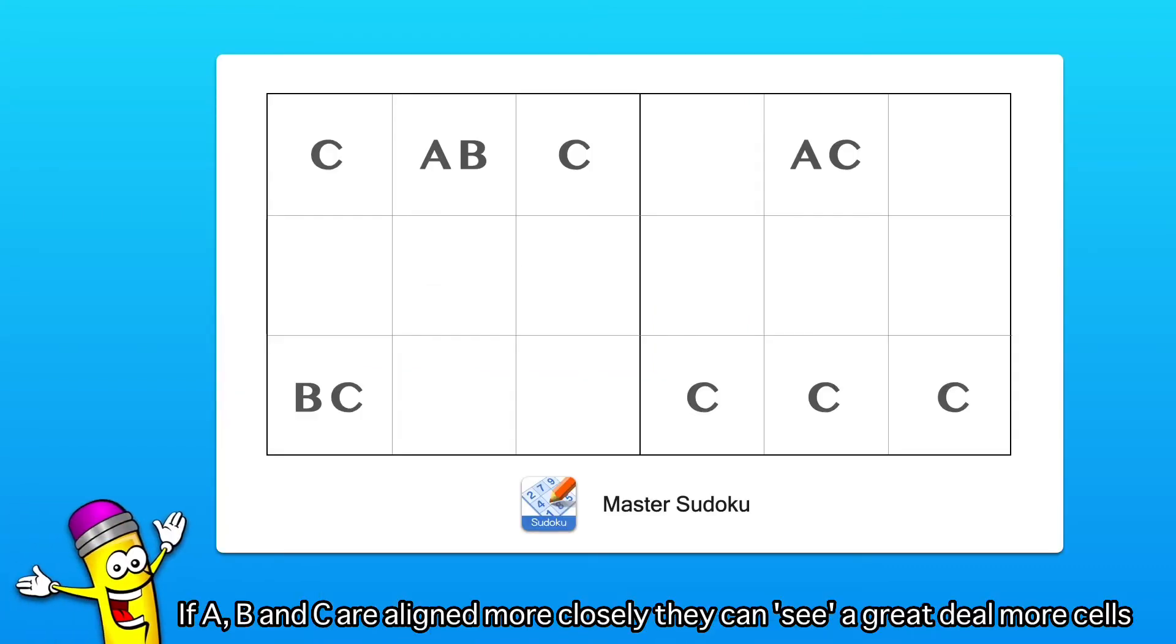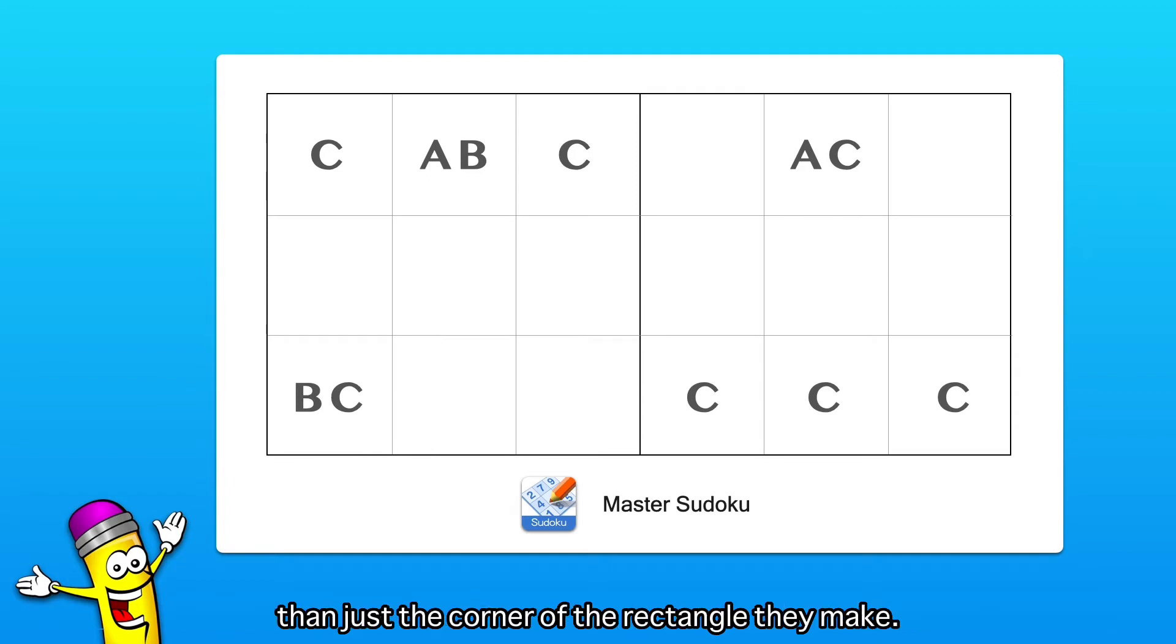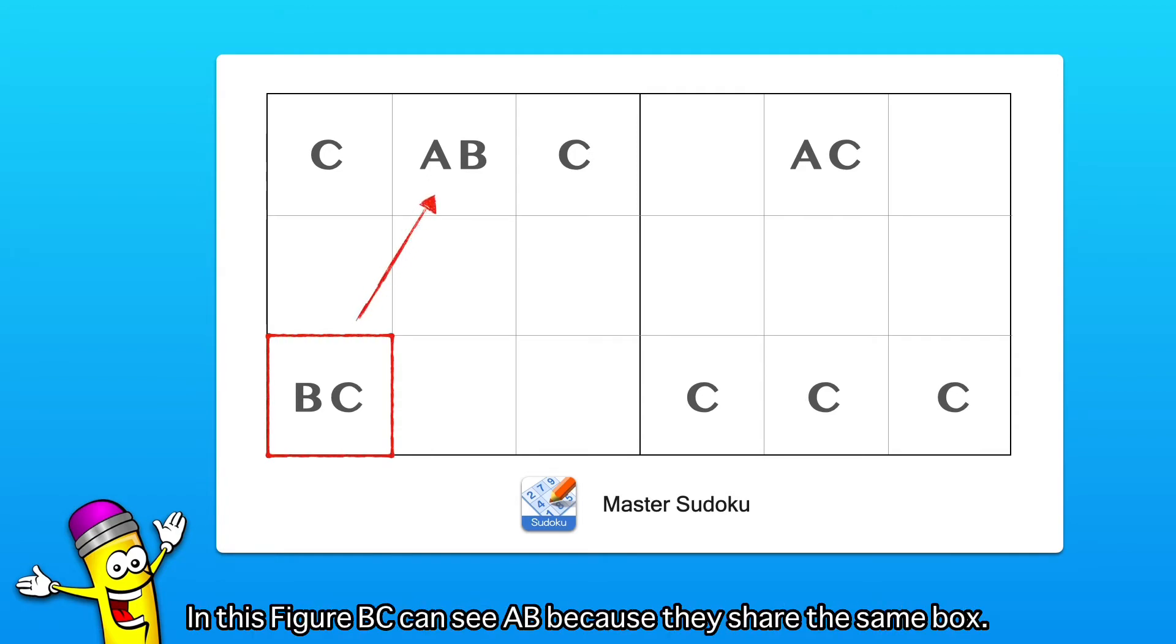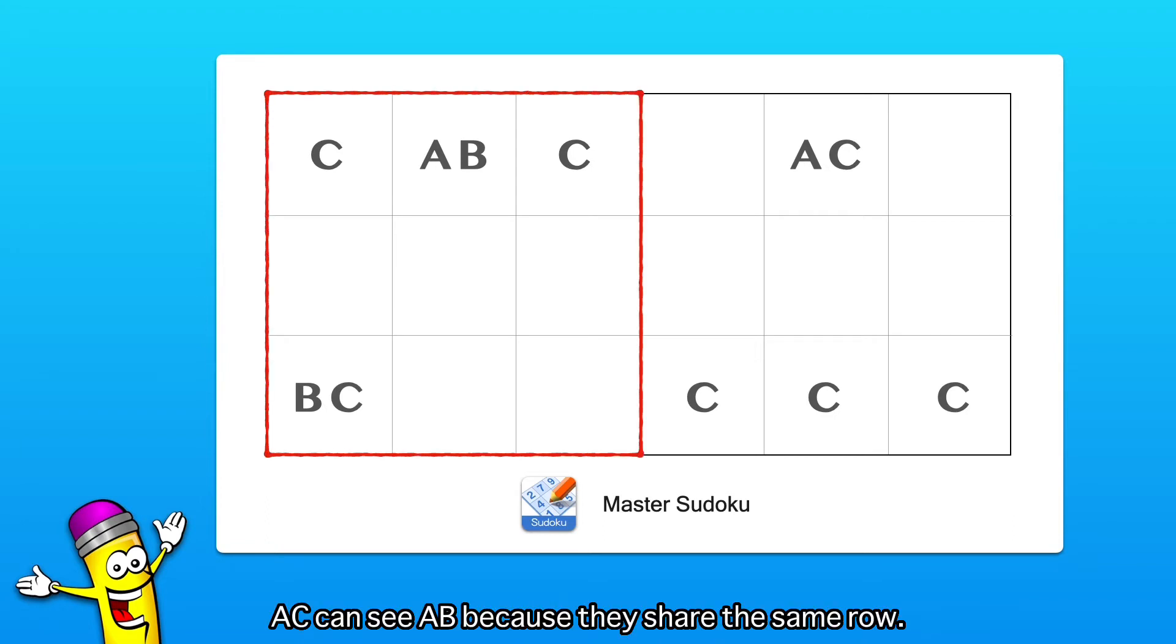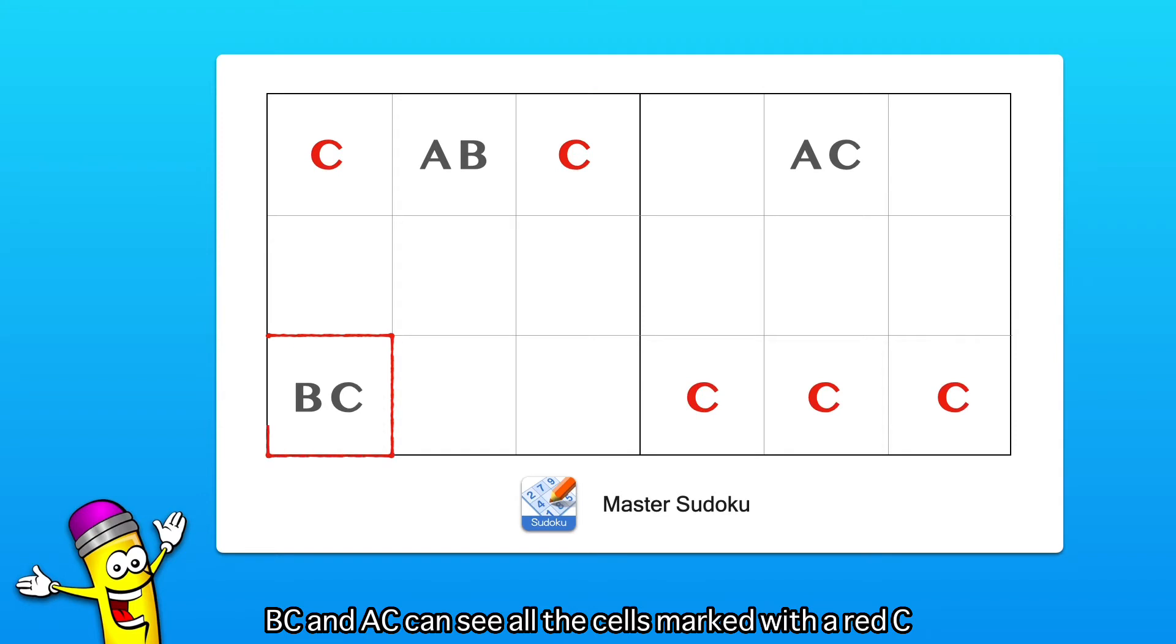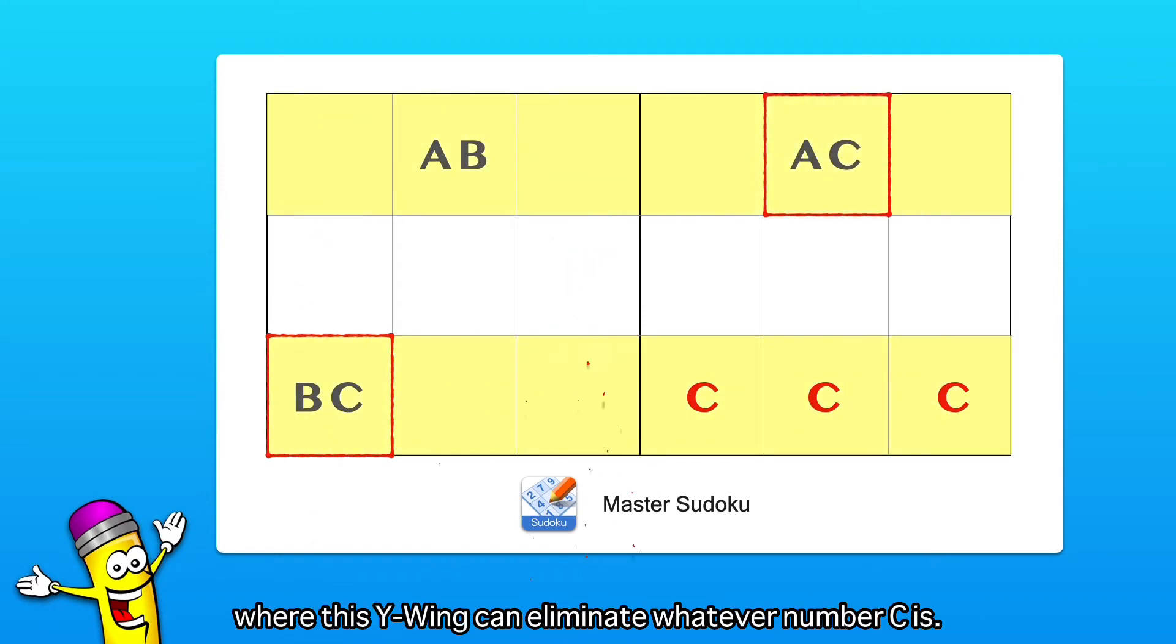If A, B, and C are aligned more closely, they can see a great deal more cells than just the corner of the rectangle they make. In this figure, B, C can see A, B because they share the same box. A, C can see A, B because they share the same row. B, C and A, C can see all the cells marked with a red C, where this Y-wing can eliminate whatever number C is.